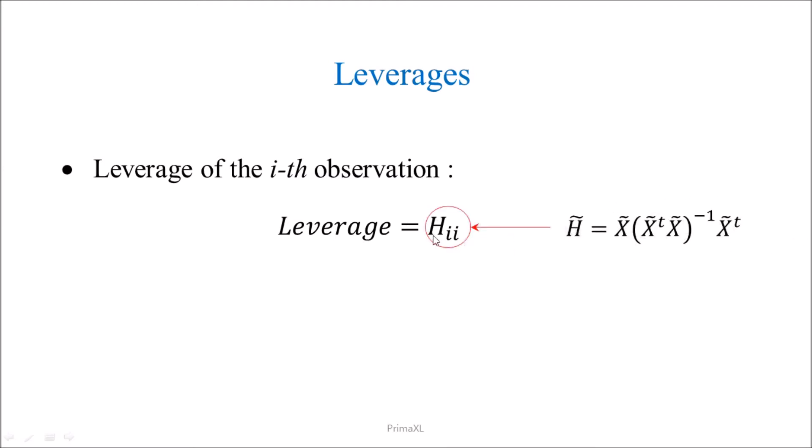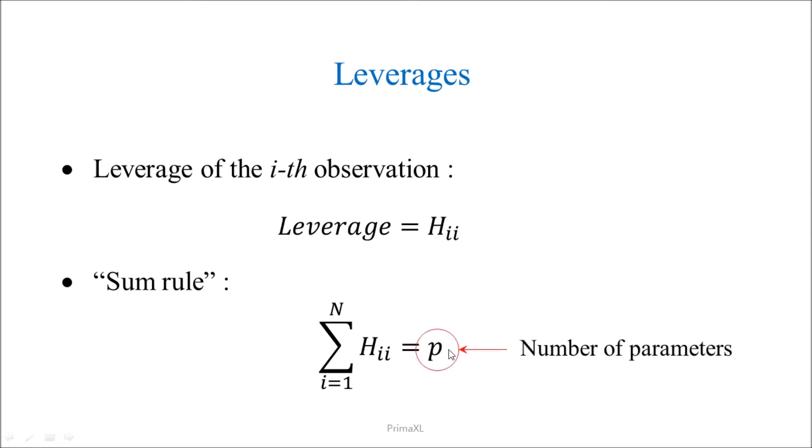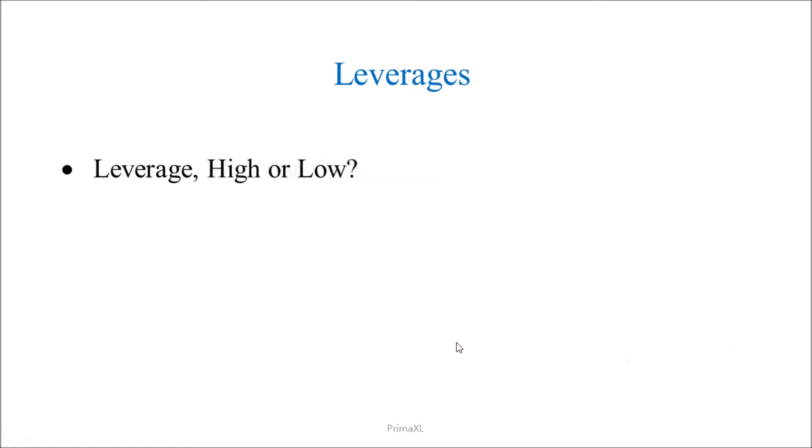What is interesting is that there is a so-called sum rule, which says that the sum of all the leverages must be equal to the number of the parameters, denoted here by the letter P. So, how can we tell whether the leverage is high or low? From the sum rule of the previous slide, we can say that the average value of the leverage is the number of the parameters divided by the number of observations. Above this average would be high leverage, and below it would be low leverage.